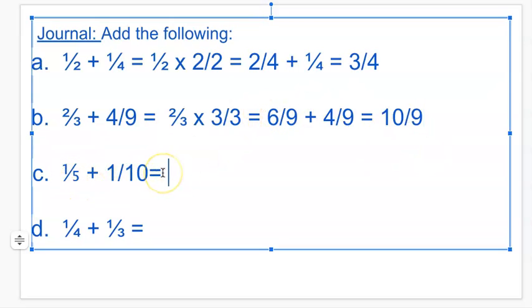1 fifth plus 1 tenth. So I know 5 and 10. 5 is half of 10. So I can take 1 fifth and multiply by 2 over 2. And I would get 2 over 10. Right? 1 times 2 is 2. 5 times 2 is 10. And then I could add that to 1 tenth. And I would get 3 over 10.